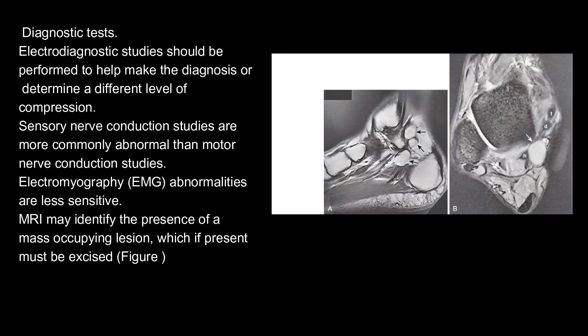Electrodiagnostic studies should be performed to help make the diagnosis or determine a different level of compression. Sensory nerve conduction studies are more commonly abnormal than motor nerve conduction studies. EMG abnormalities are less sensitive. MRI may identify the presence of a mass-occupying lesion, which if present must be excised. Surgical decompression with mass excision results in more predictable symptomatic improvement compared to patients without a mass-occupying lesion. Correlation with history and physical examination findings is essential.